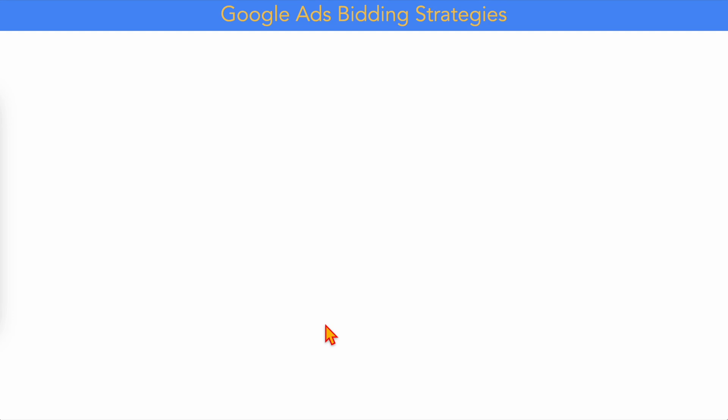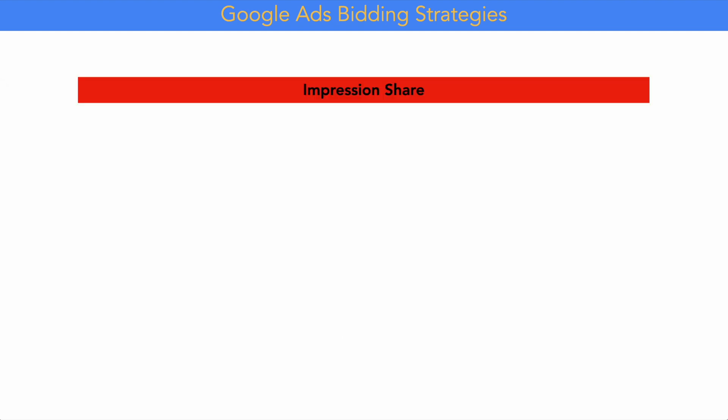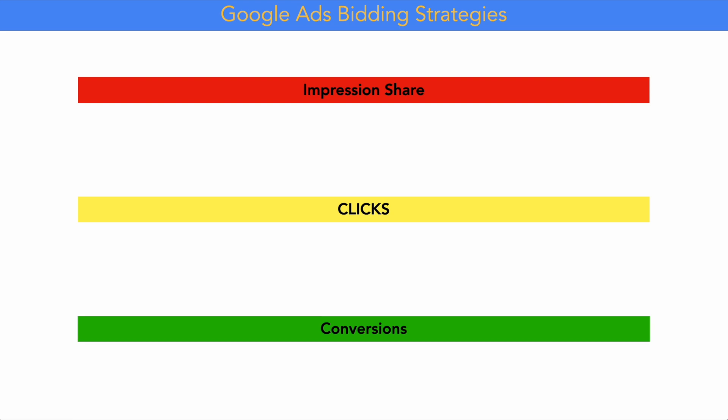There are three different categories of Google Ads bidding strategies. The first targets your impression share, the second focuses on clicks, and the third group of strategies is focused on getting more conversions or sales for your Google Ads campaign.